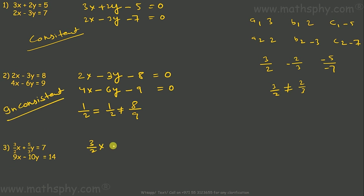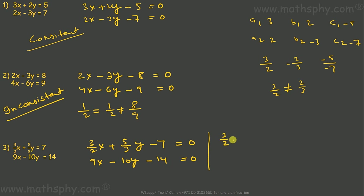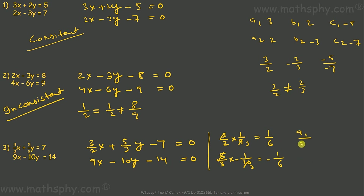Third pair: (3/2)x + (5/3)y - 7 = 0 and 9x - 10y - 14 = 0. Here a1/a2 = (3/2) × (1/9) = 1/6, and b1/b2 = (5/3) × (1/10) = 1/6 negative — wait, since a1/a2 is not equal to b1/b2, there is no need to check c1/c2. This gives intersecting lines, meaning the system is consistent.